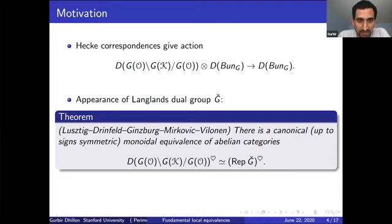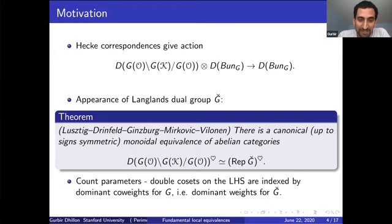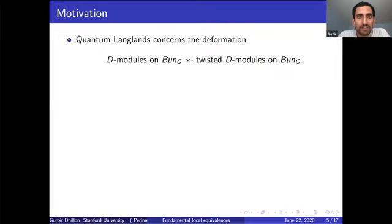Modifying bundles at a point gives rise to an action of the spherical Hecke category on D-modules in BunG. One of the first appearances of Langlands duality is the geometric Satake equivalence, due to Lusztig, Drinfeld, Ginzburg, Mirković, and Vilonen, which says there's a monoidal equivalence at the level of abelian categories between the spherical Hecke category for G and representations of the Langlands dual group G-check. The double cosets on the left are indexed by dominant coweights for G, which are the same as dominant weights for G-check.